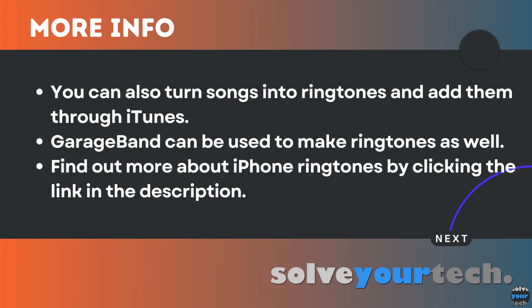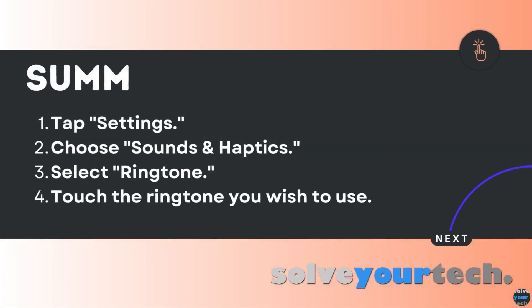You can click on the article link in the description to find out more about iPhone ringtones. To summarize, when you want to change the ringtone on your iPhone, you need to open the settings menu, choose the sounds and haptics option, select ringtone, then tap on a tone to use it.